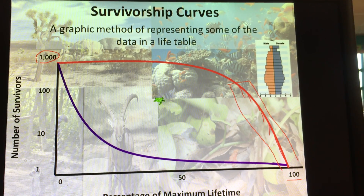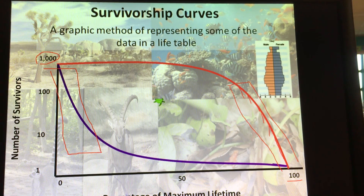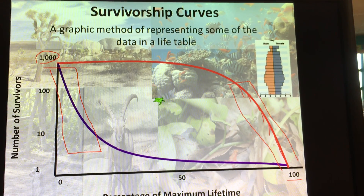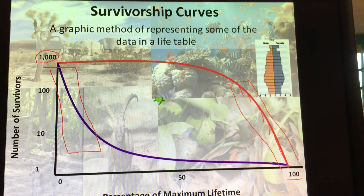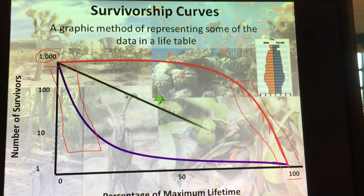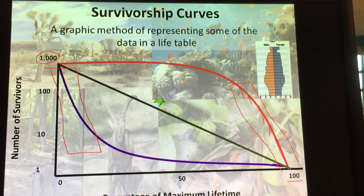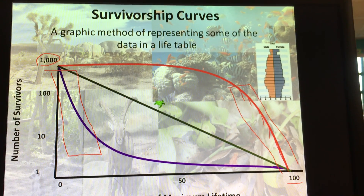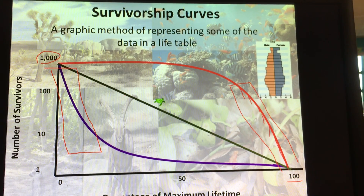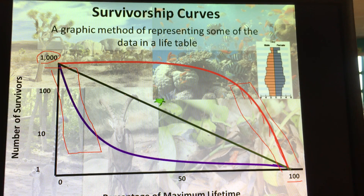You have the purple line, which is the opposite — you see a high death rate in the beginning, and then once they reach a certain age, they have a high chance of survival. The green line is showing that you have an equal chance of death at any age of your life. This would be like rodents or insects — they have an equal chance of dying when they're first born versus when they're old or middle age.